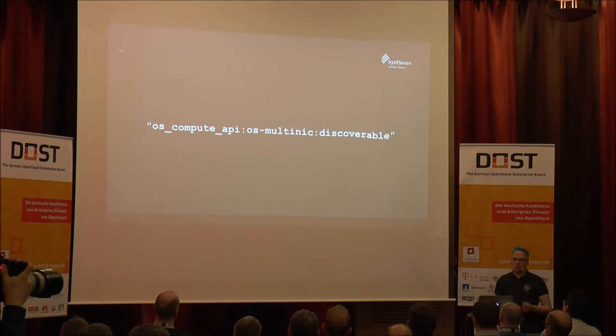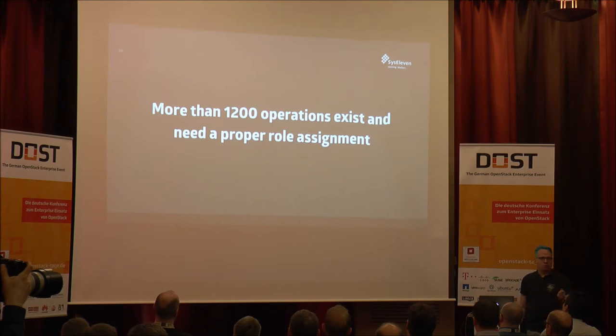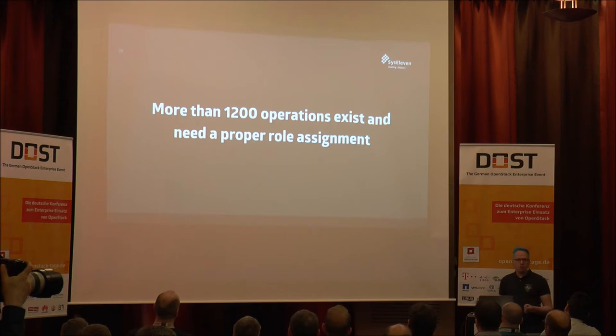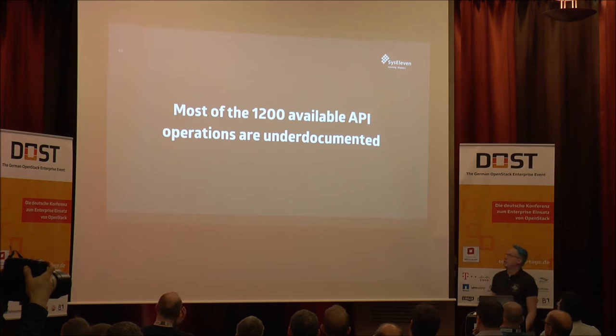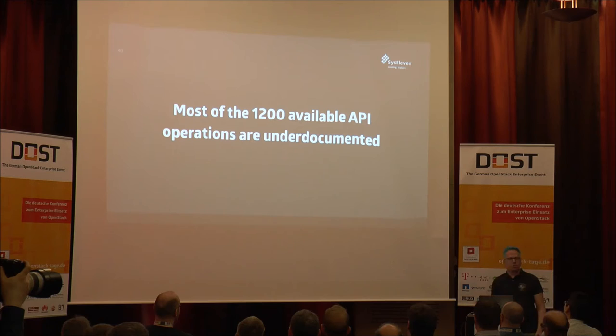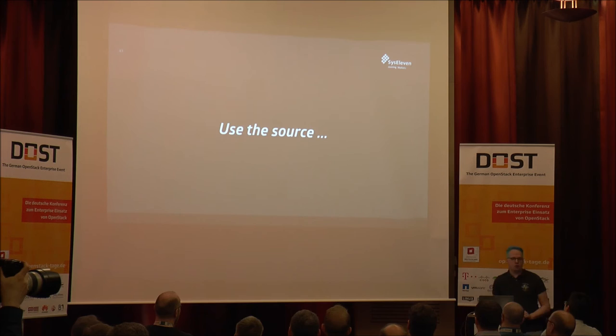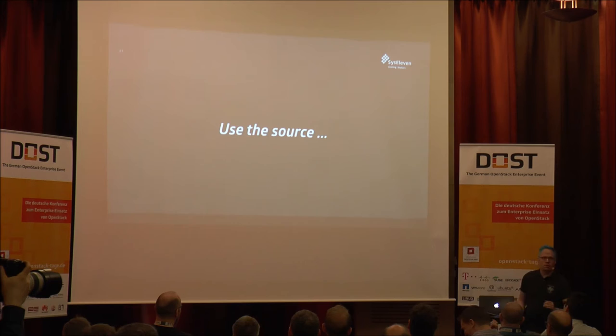There are more than 1,200 operations that exist and you would need to check all of them when you change the role assignments from the OpenStack default. The official documentation for Oslo policies strongly disincentivizes people from doing that because they say anything could happen — and we tried, and yes, anything can happen. Because most of the 1,200 API operations are under-documented. I don't want to say they are undocumented, because you can always use the source, right? You can just go there and read 480 lines of Python. And we did that.